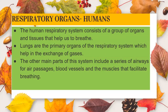In humans, respiration takes place through a complex system of organs. These organs collectively make the respiratory system. The human respiratory system consists of a group of organs and tissues that help us to breathe. Lungs are the primary organs of the respiratory system which help in the exchange of gases. The other main parts of the system include a series of airways for air passages, blood vessels, and the muscles that facilitate breathing.